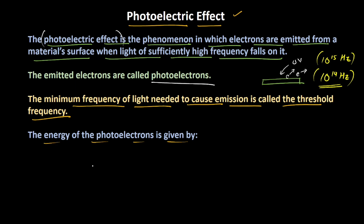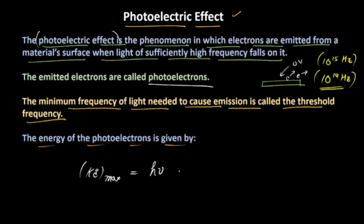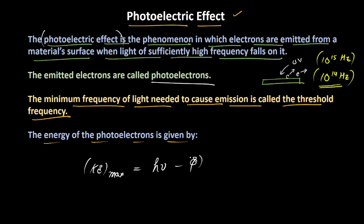Here is the equation of the maximum kinetic energy of the photoelectrons. It is equal to the energy of the incoming photon minus the work function, because this much energy would be utilized in just ejecting the photoelectrons from the metal surface. This phi, that is the work function, can also be written as H nu-zero, where nu-zero is the threshold frequency — the minimum frequency required to just eject the electron.